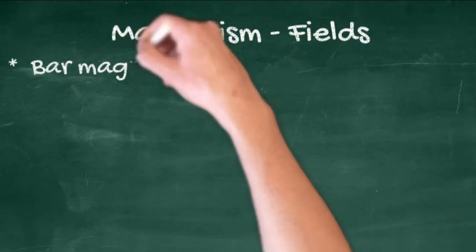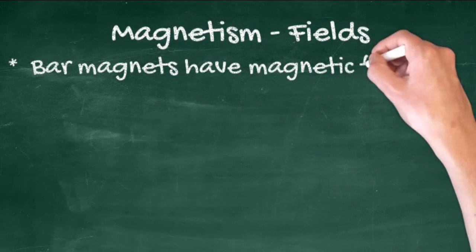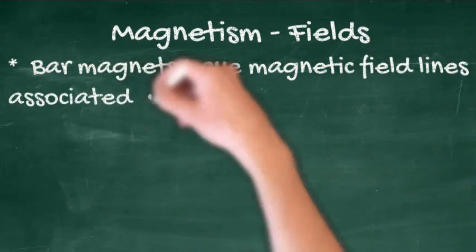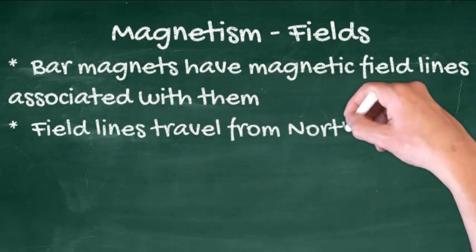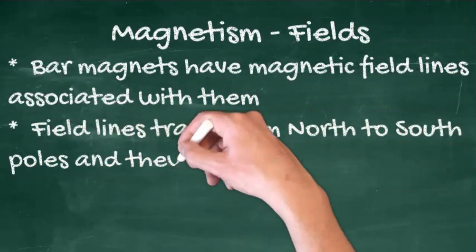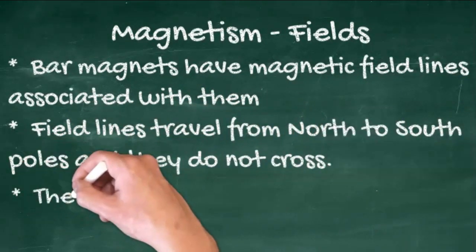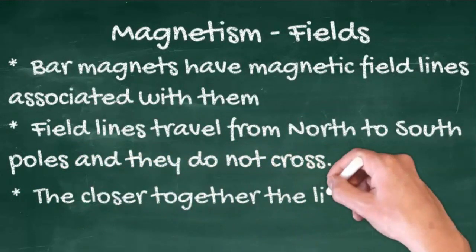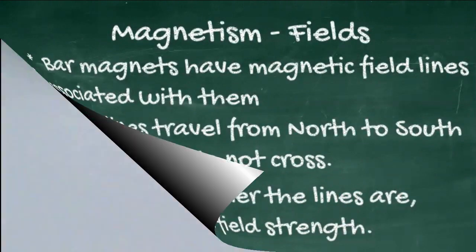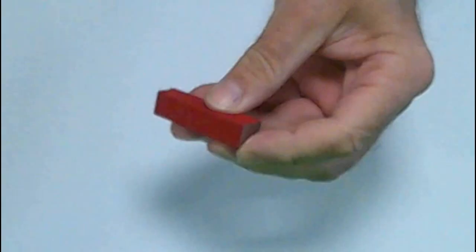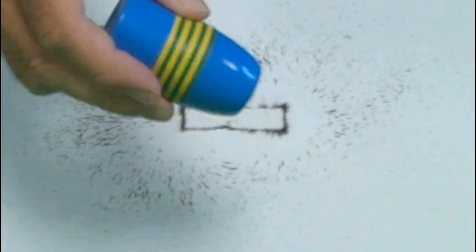I mentioned field lines. Bar magnets have magnetic field lines associated with them. Field lines travel from north to south and they do not cross. The closer together the lines are, the greater the field's strength. Cover a normal bar magnet with just a sheet of paper, and the field lines can be shown by sprinkling iron filings over the paper.